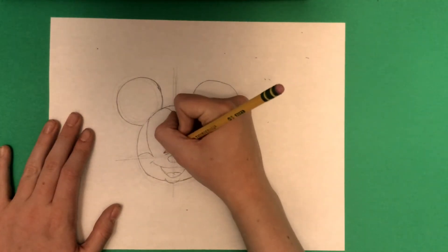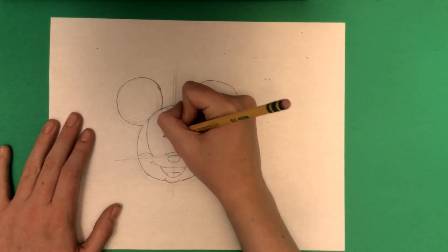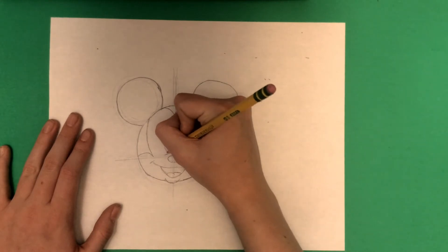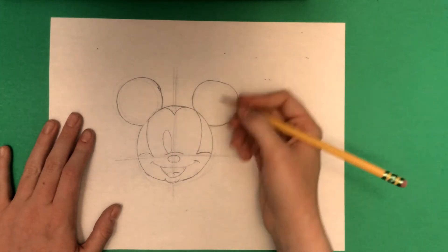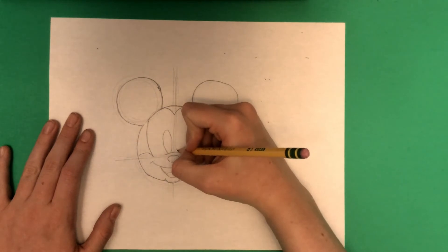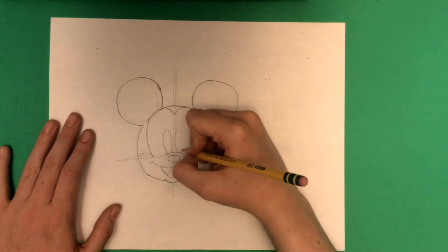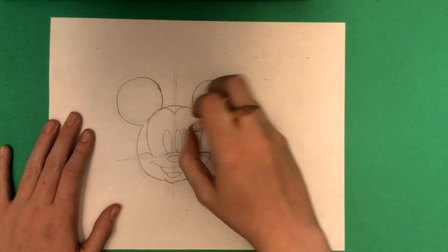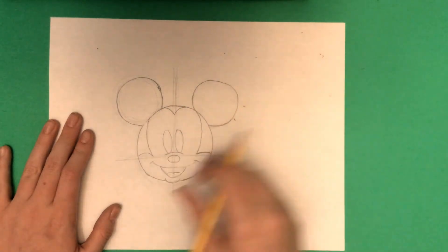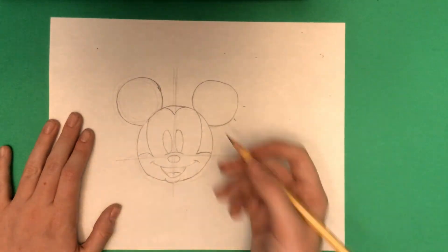Time for the eyes. Just make long, stretched-out ovals on top of that nose line. Do it on both sides. Make sure they're pretty symmetrical. That looks like zombie Mickey!